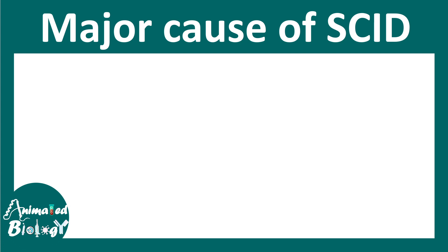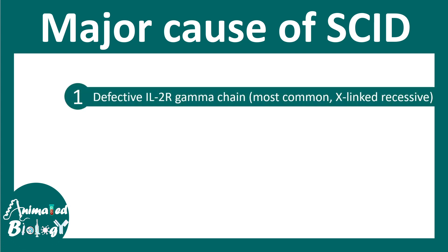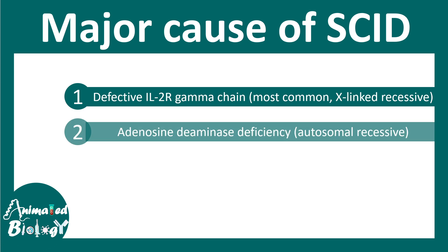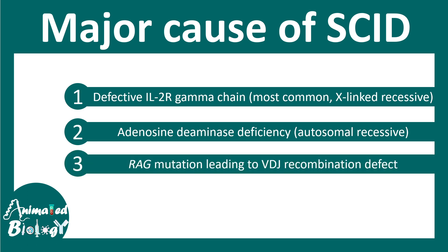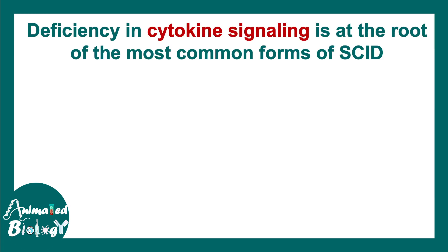Let's see what these genetic defects are. Among the major causes of SCID, we can identify a defective interleukin-2 receptor gamma chain, which is mostly X-linked and recessive. There could also be a defect in the gene that produces adenosine deaminase. Additionally, there could be defects in the recombinase-associated genes required for VDJ recombination. All three are important aspects of T- or B-cell development, which is why T-cell and B-cell activity is compromised.